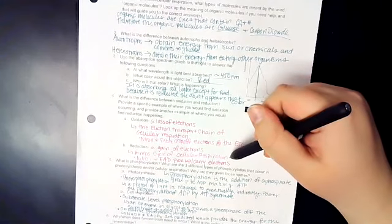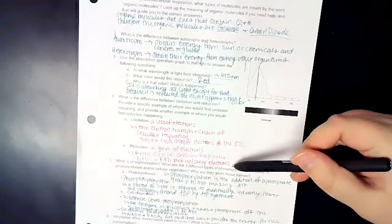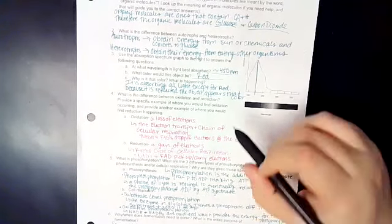Reduction is going to happen in our Krebs cycle. So their NAD+ and FAD are going to pick up or carry the electrons. So they're going to pick up the electrons from the Krebs cycle and then carry those over to the electron transport chain.